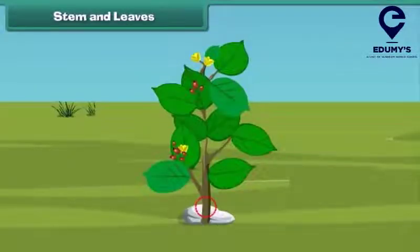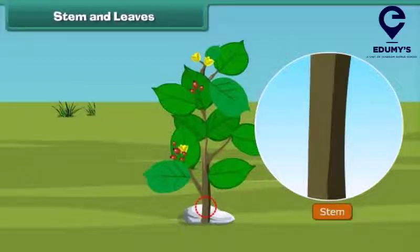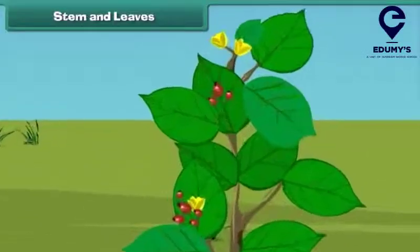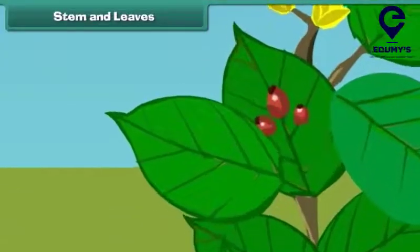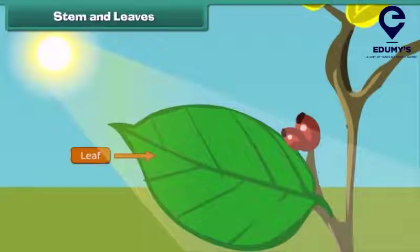The next part of a plant is the stem. A stem is the hard part of a plant which grows above the ground. It bears leaves, roots, and flowers, and also supports the plant. Friends, do you know which part of the plant helps it to prepare food? That's right — it is the leaves! Leaves are green in color and grow out of the stem.